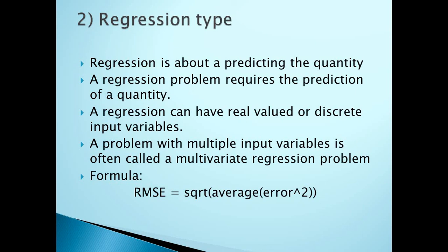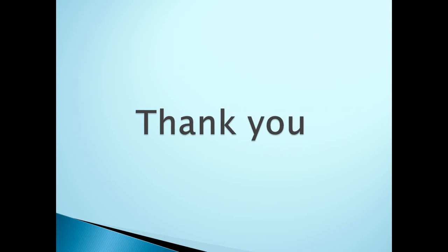In regression, if there are multiple input variables, it is called a multivariate regression problem. For example, predicting the quality of wine involves multiple input variables, so the wine quality dataset comes under multivariate linear regression. You use the RMSE formula to evaluate such models. I hope you understand the difference between regression and classification. Please subscribe to my videos — thank you for watching, bye!